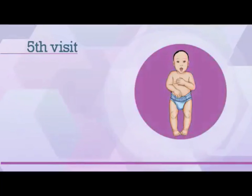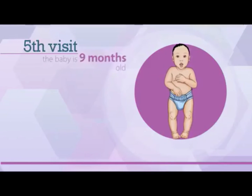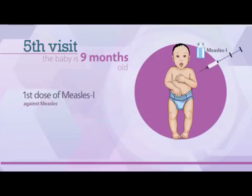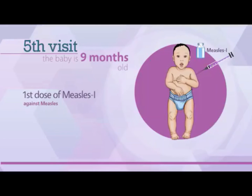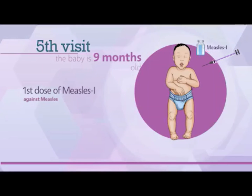The fifth visit is scheduled when the baby is 9 months old. On this visit, the first dose of measles 1 vaccine is administered subcutaneously in the left arm for protection against measles.